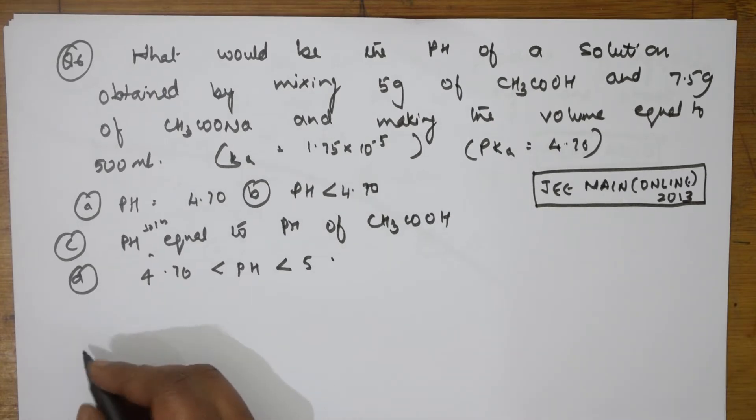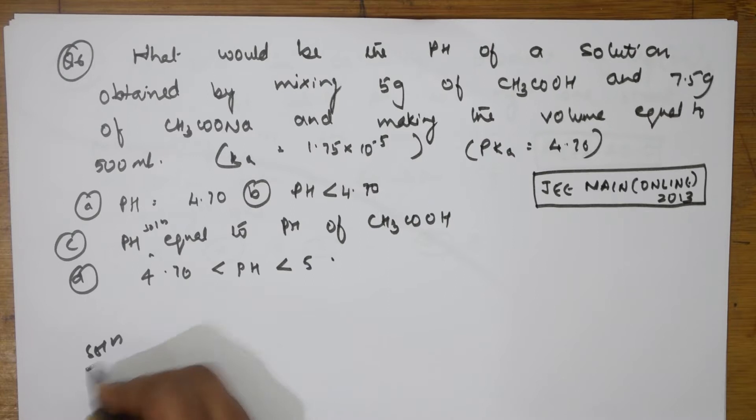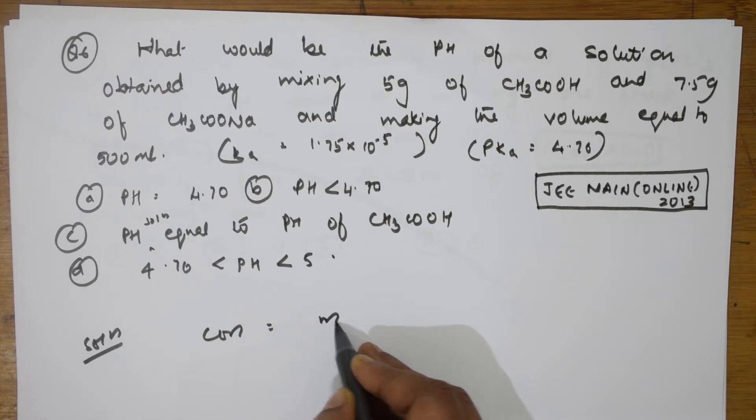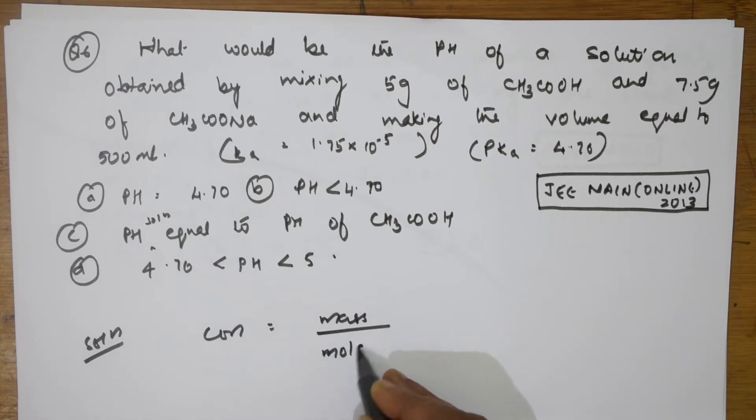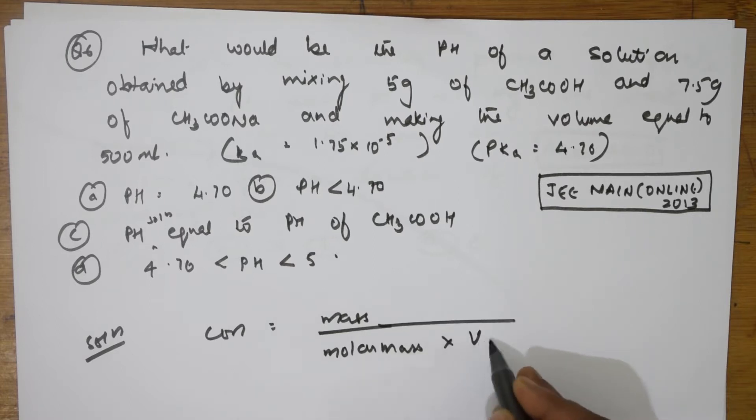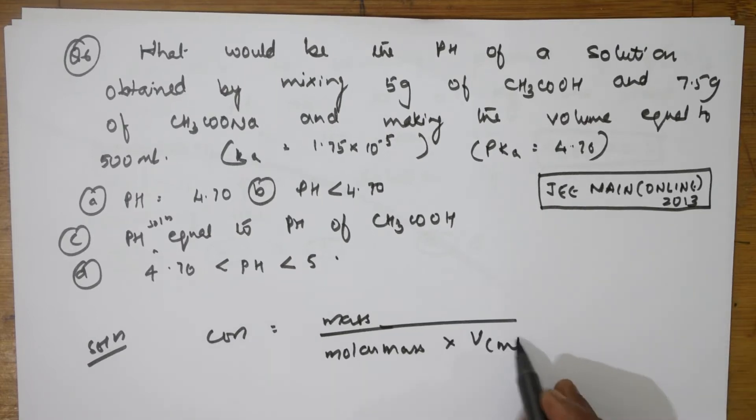So to solve such questions, first important thing, you need to remember the formula. Basically, what is that? Concentration is equal to mass by molar mass into volume in ml. Correct.